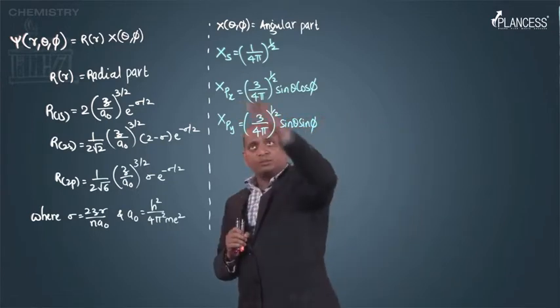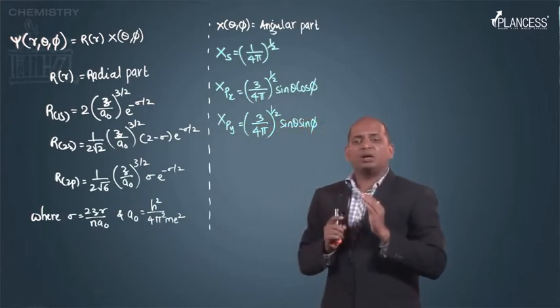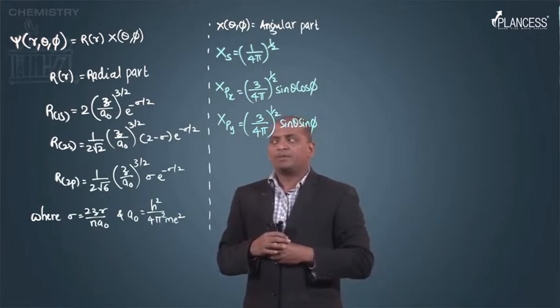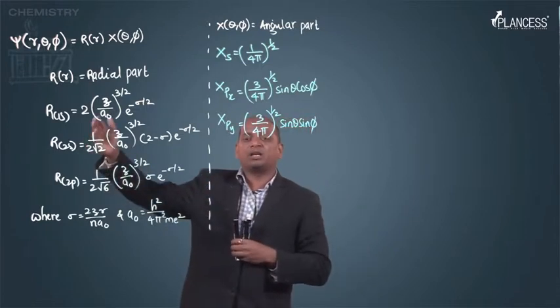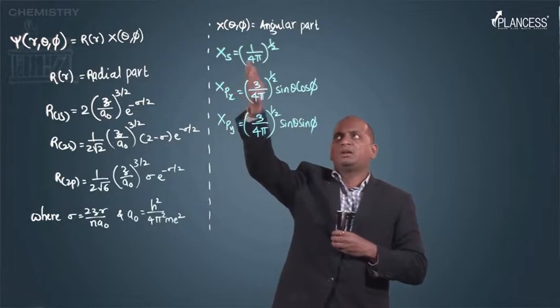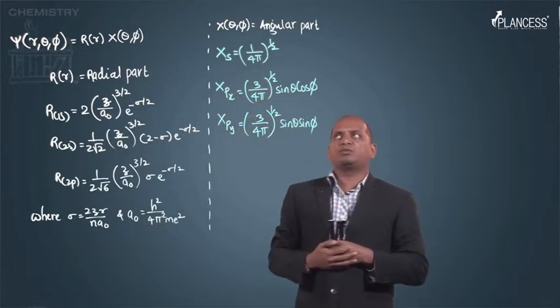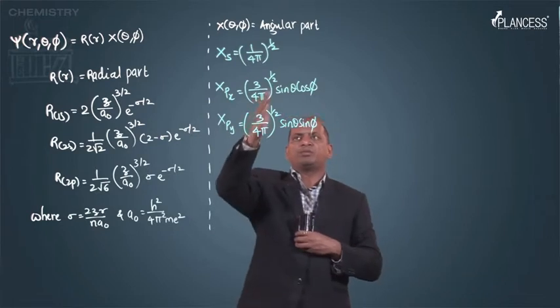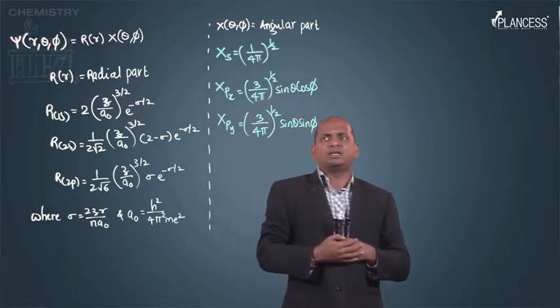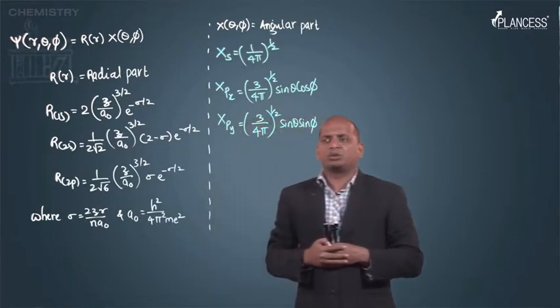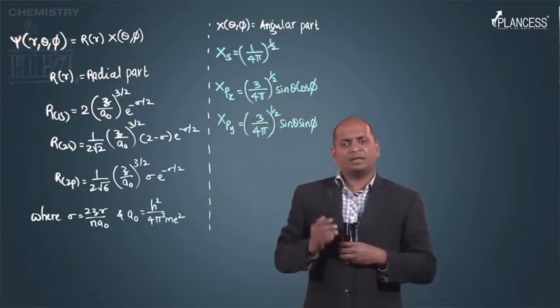Now, if you observe carefully, these are telling you about only orbitals. For s orbital, angular part is 1/(4π)^(1/2). px orbital: (3/4π)^(1/2) sin θ cos φ. py orbital: (3/4π)^(1/2) sin θ sin φ, like that.